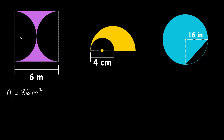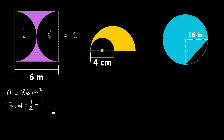Obviously this is not all filled in — we do have these two semi-circles that are cut out, so we have to subtract those areas. A semi-circle is just half a circle, and if we have half a circle here and half a circle here, half plus half equals one full circle. So all we have to do is take the total area and subtract the area of one full circle.